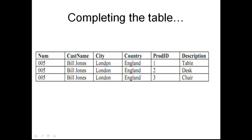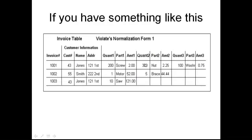Now we have three customer names, cities, countries, etc. If you have something like quantity 1, quantity 2, quantity 3, part 1, part 2, part 3 — again we have repeating groups.